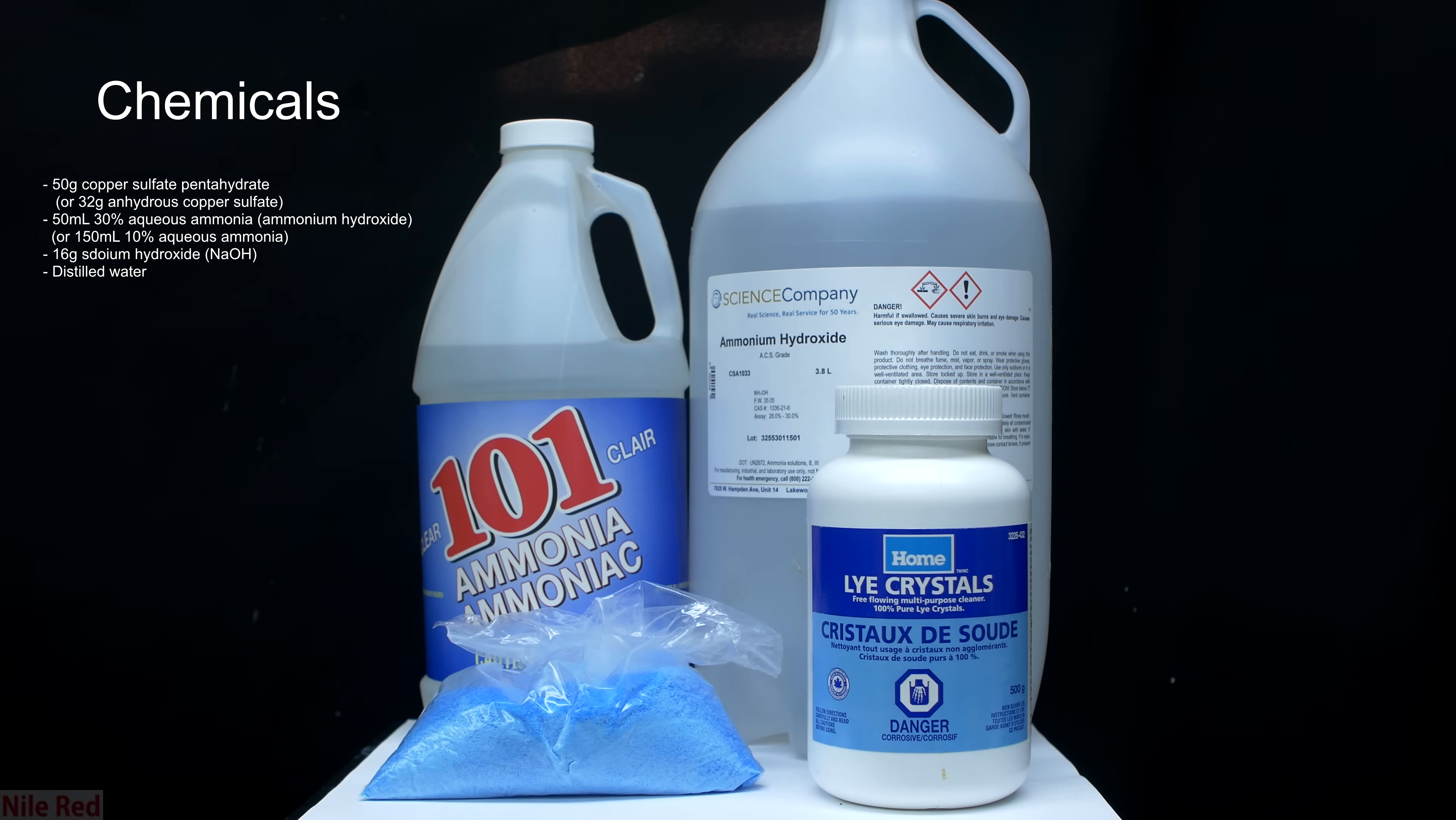Now for the other ingredients, they're pretty basic. At the bottom left we have our copper sulfate pentahydrate, and at the bottom right we have some sodium hydroxide. I bought the copper sulfate from eBay, but it can also be found in some stores as stump remover, and the sodium hydroxide is sold as drain cleaner.